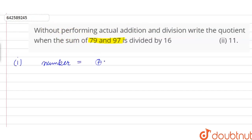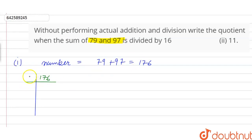79 plus 97 is equal to 176. If we factorize 176, dividing it by 2 we have 88. Again dividing by 2 we have 44.